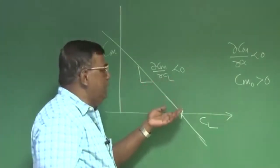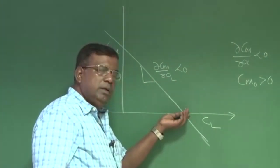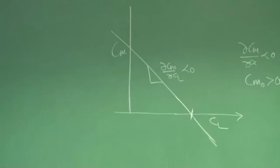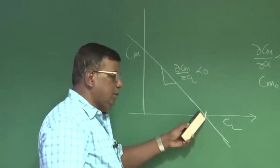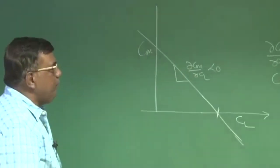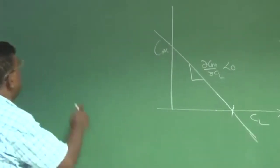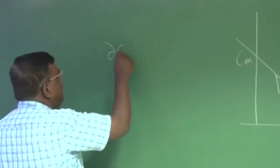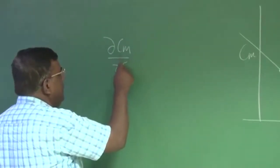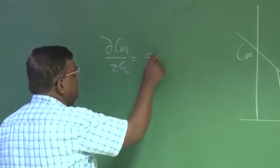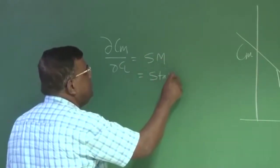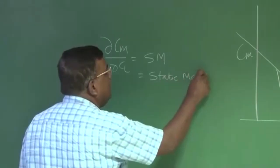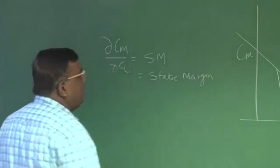So now, what we do is pretty simple. A designer will prefer to have Cm versus CL graph like this and the slope is dCm/dCL, which should be less than 0 at trim, that is important. When I am talking about stability, I am talking about a trim point. When I am talking about stability, I am talking about a slope about the equilibrium, about the trim here.